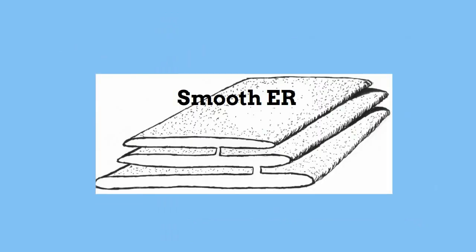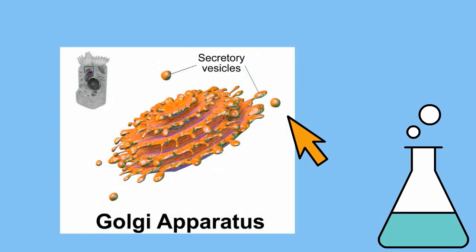Smooth ER looks smooth because it does not have any ribosomes. It has a different job than the rough ER. The smooth ER produces important chemicals called enzymes. Some of these enzymes will pinch off in a vesicle and travel to the Golgi apparatus.